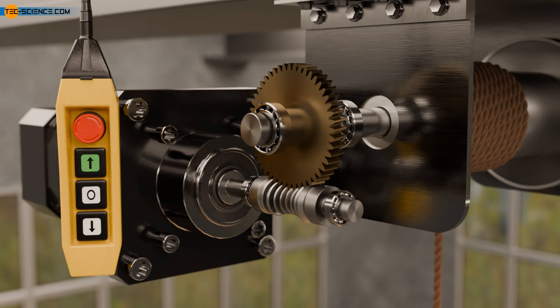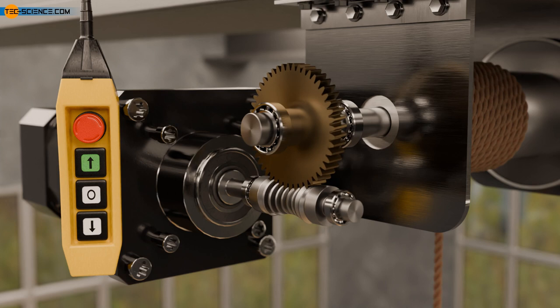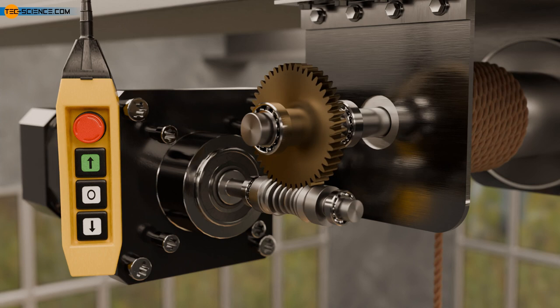The advantage of worm drives is that they are self-locking. Gearboxes are described as self-locking if the power can only be transmitted in one direction. This means that the gearbox can only be driven by the input shaft. The gear unit cannot be set in motion by the output shaft.